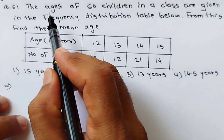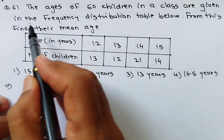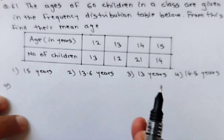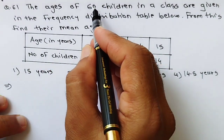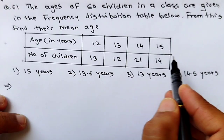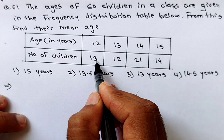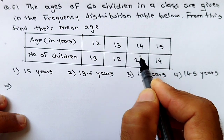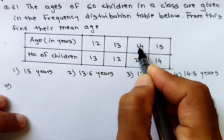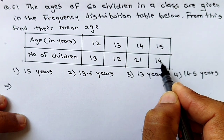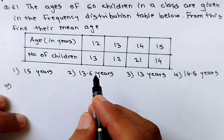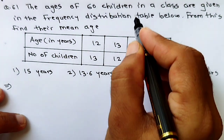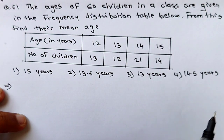See question number 61. The ages of 60 children in a class are given in the frequency distribution table below. From this, find their mean age. Mean age means the average of all 60 children. Here what is given: 13 children are of age 12 years, 12 children are of age 13, 21 children are of age 14, and 14 children are of age 15. We must calculate the total age of all 60 children and then take the average.